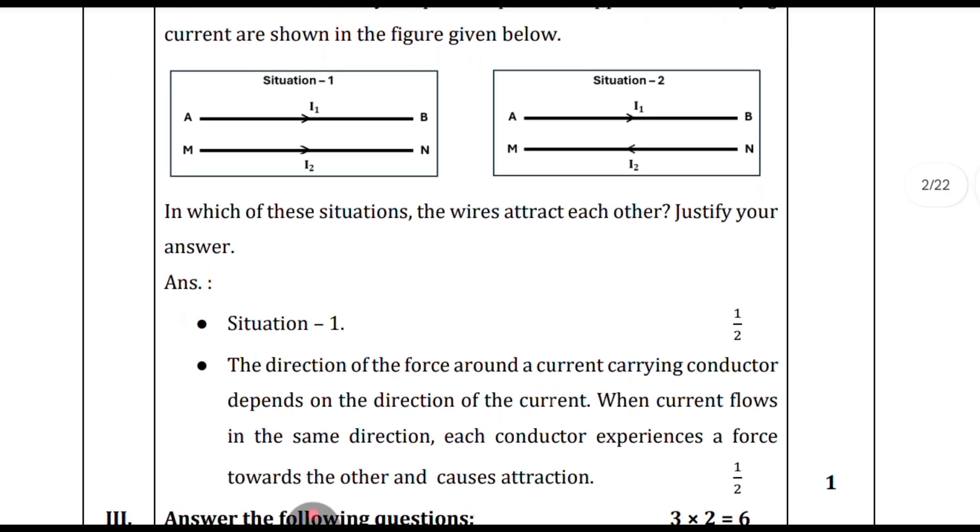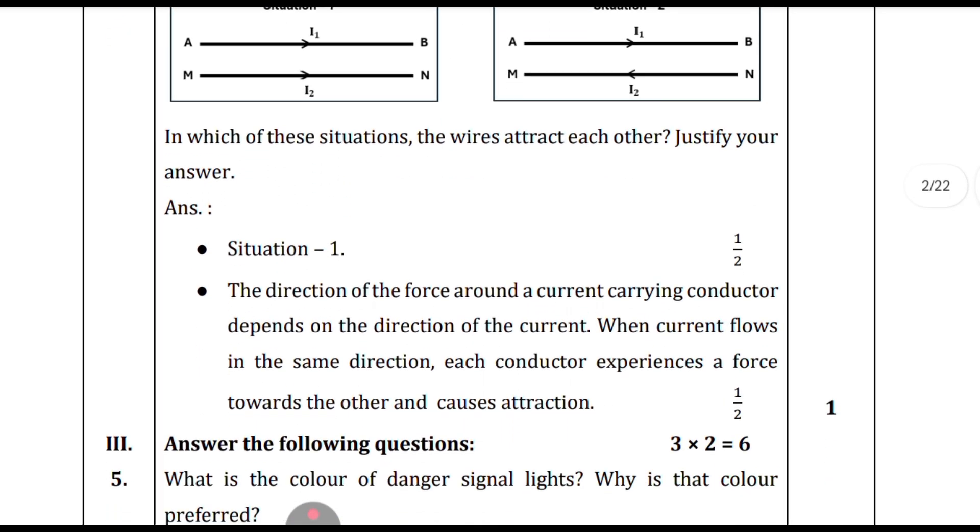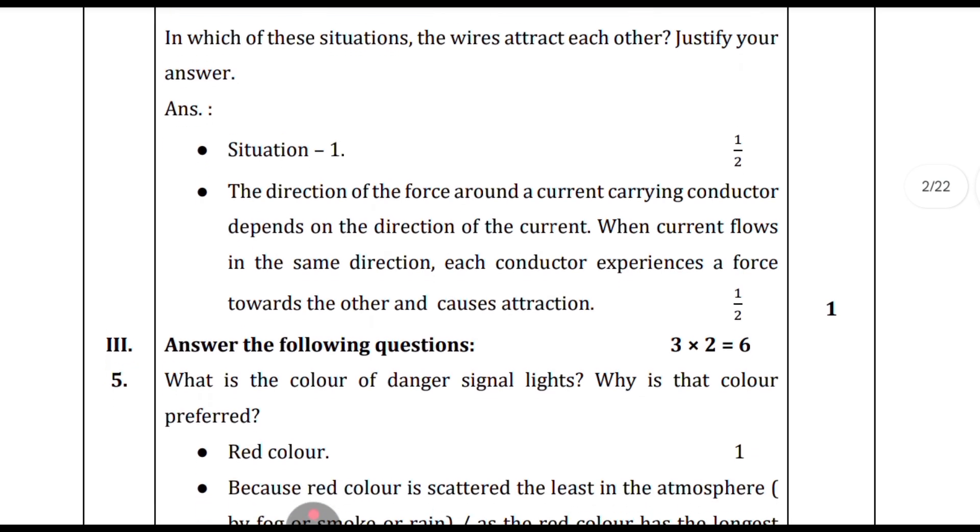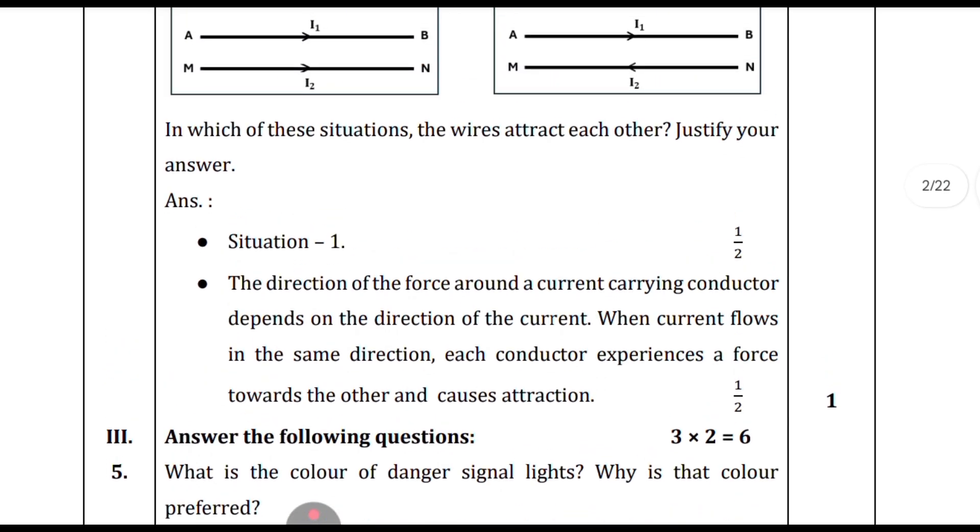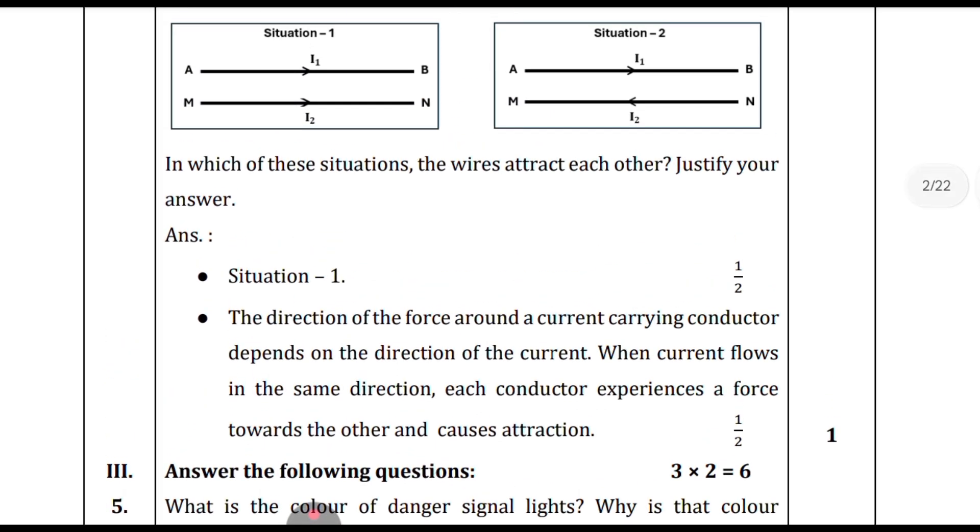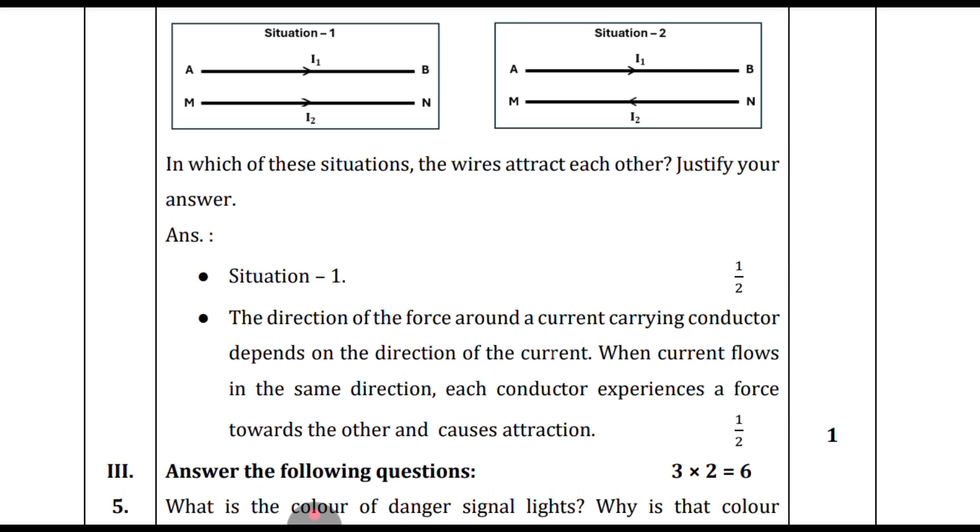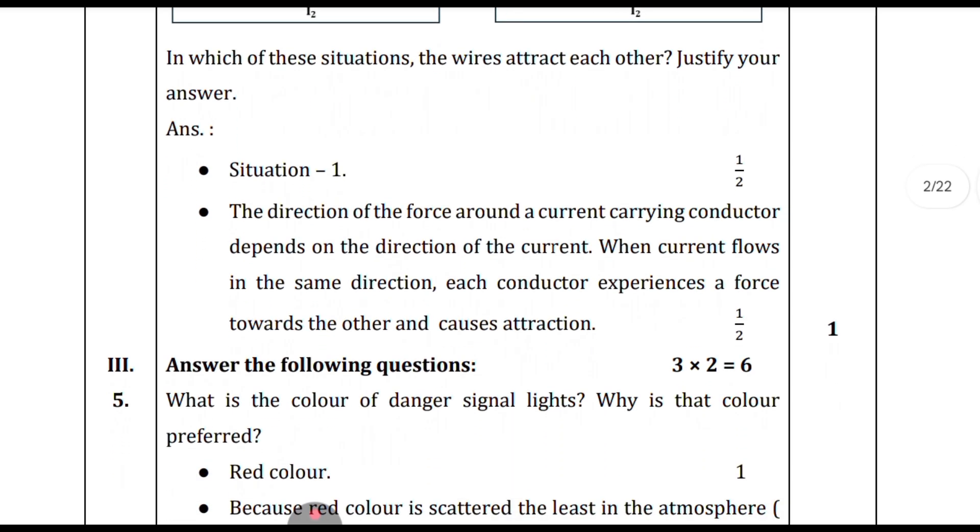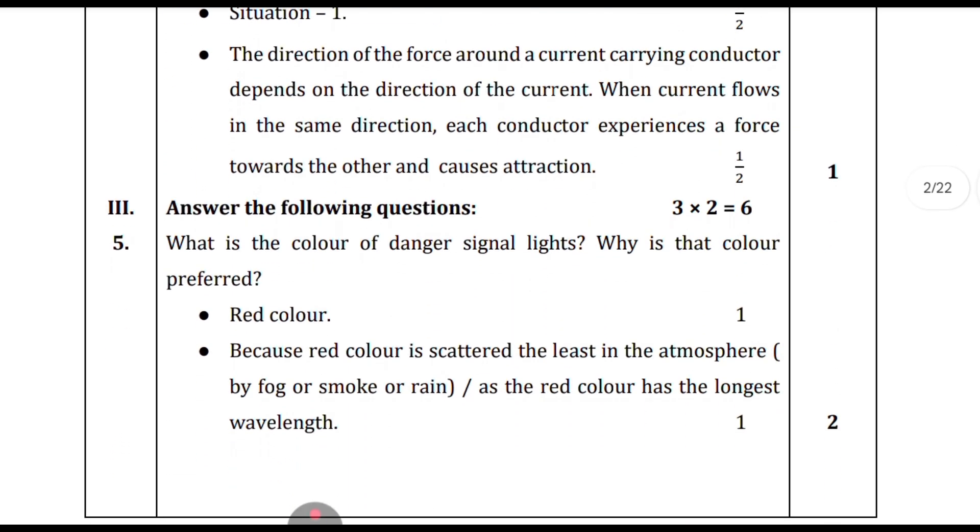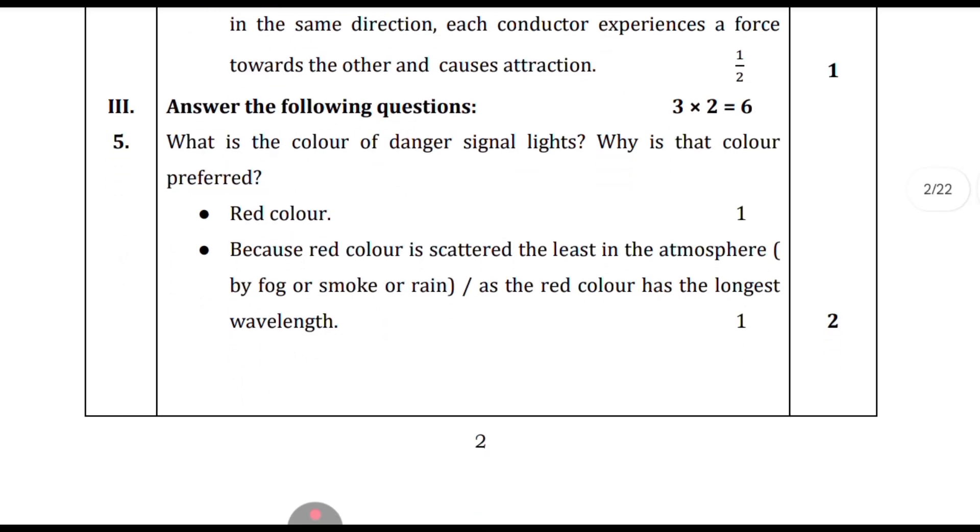Two situations of freely suspended parallel copper wires carrying current are shown in the figure. In situation one, the wires attract each other. The direction of the force around a current carrying conductor depends on the direction of the current. When current flows in the same direction, each conductor experiences a force towards the other and causes attraction.